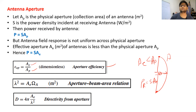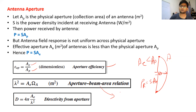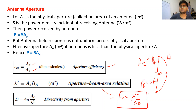There is a formula which relates the effective area of an antenna with the antenna beam angle: Ae = lambda squared divided by omega-A, where omega-A is the beam area. We have already discussed this, so you should remember this formula.